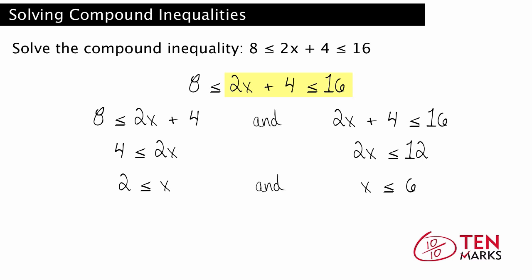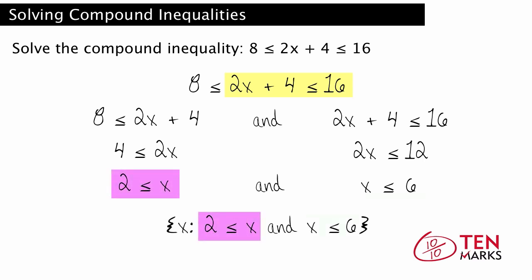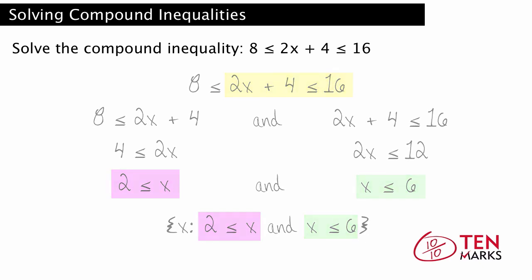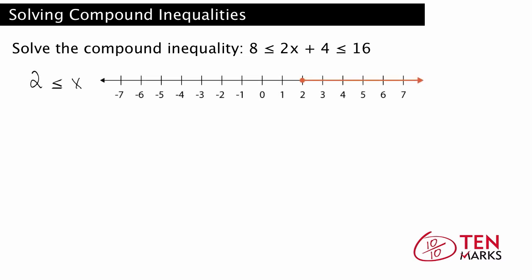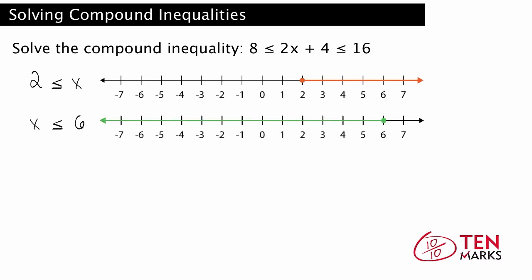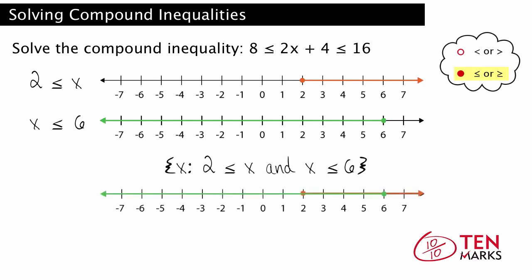The solution set combines the solutions of both simple inequalities. This solution set is the set of all x such that 2 is less than or equal to x and x is less than or equal to 6. To graph the solution set, you graph the simple inequalities separately first. The number line shows 2 is less than or equal to x, and this number line shows x is less than or equal to 6. Notice that solid circles are used because x is also equal to 2 and equal to 6. The solution is where the two graphs overlap, also called the intersection of the two graphs.